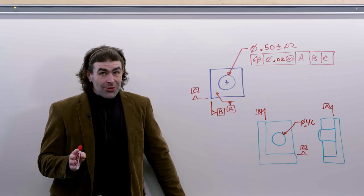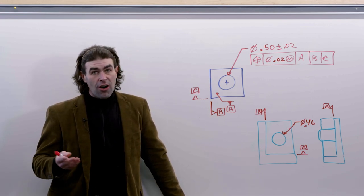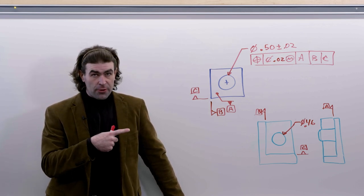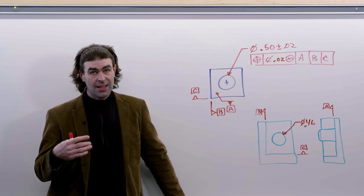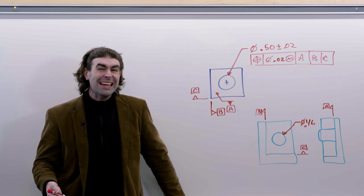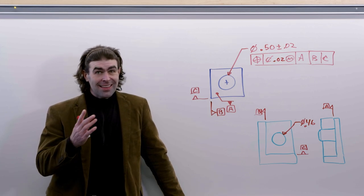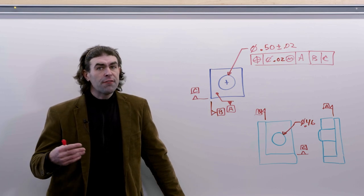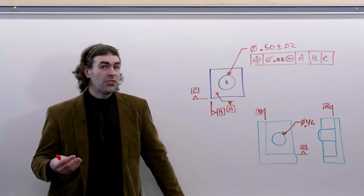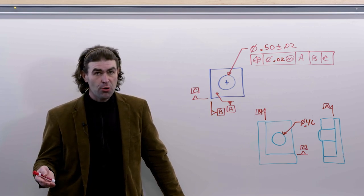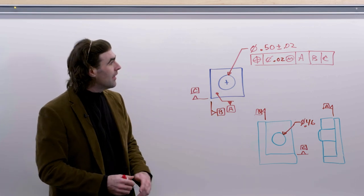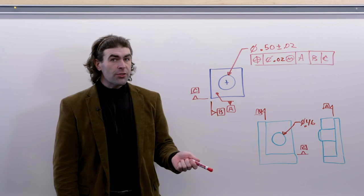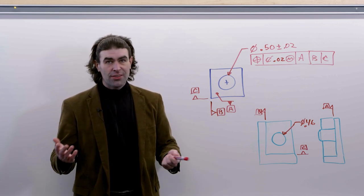Of course you can't always make gauges for everything, so often you'll check this tolerance applied to MMC the same way you would a tolerance applied regardless of feature size. You're going to simulate the actual mating envelope of that hole with the gauge pin. You're going to figure out where the axis of that gauge pin is, which is the axis of the unrelated actual mating envelope, and you're going to see if it's within this tolerance zone.